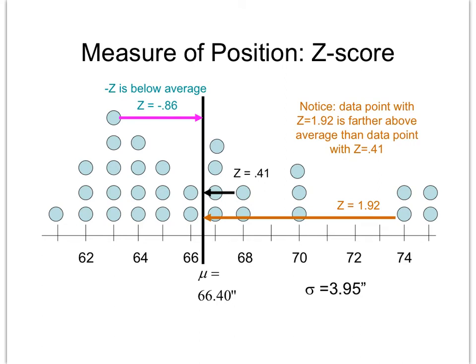Now we're looking for a z-score of 63. A z-score of 63 is going to follow the same process. The z-score equals 63 minus mu, which is 66.4, divided by the standard deviation of 3.95. Go ahead and pause the video and simplify that.